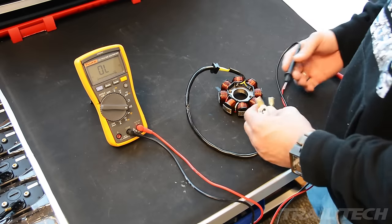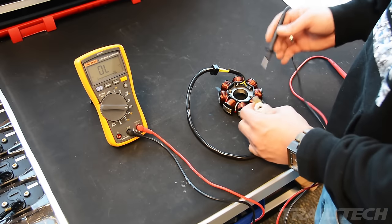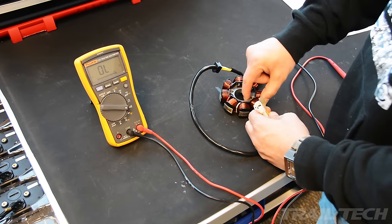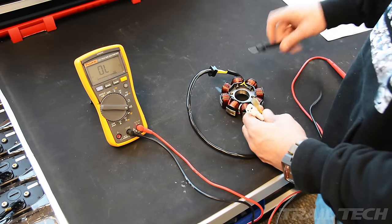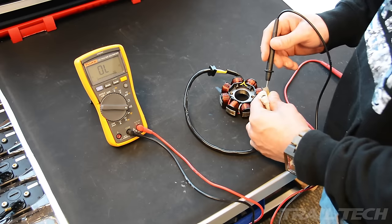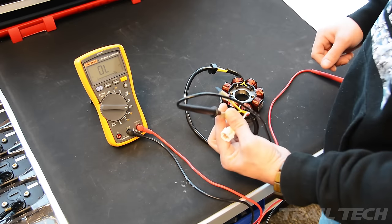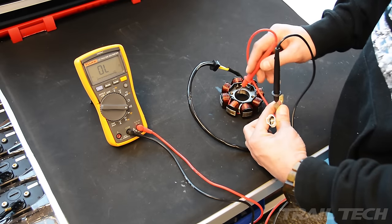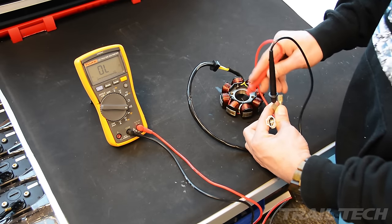Now you can check to make sure that there's no shorts by doing the same thing. You want to make sure that one of these wires is not shorting out to the coil or to the bike itself. So again, touch any of the wires like so and touch the coil. No beep is good when you're checking for shorts.